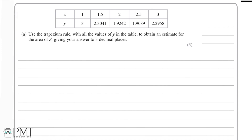We're asked to give our answer to 3 decimal places. We can work out the area using the trapezium rule by doing ½ × h, where h is the width of each bar. Then we have the big brackets containing y₀ + yₙ, added to two lots of y₁ + y₂ + all the other y's up to y_{n−1}. Then we close our brackets. This is the trapezium rule.